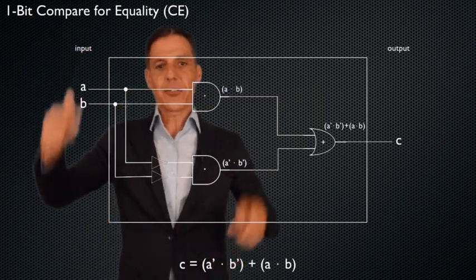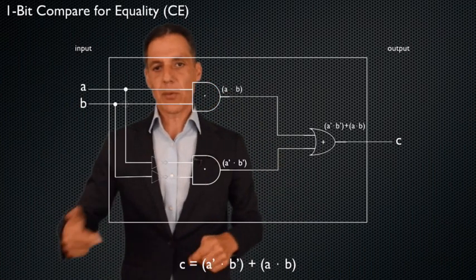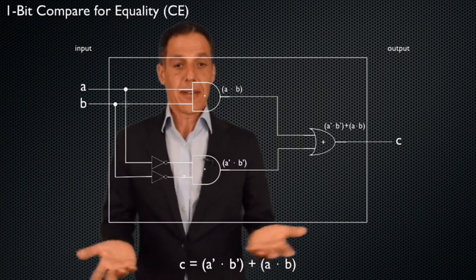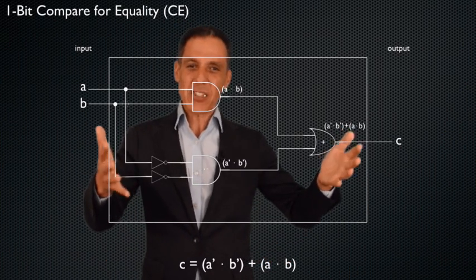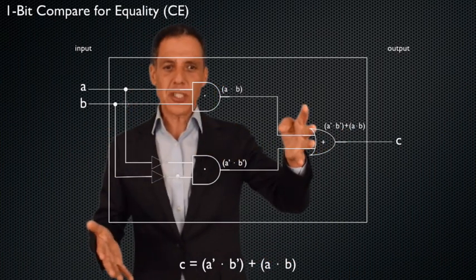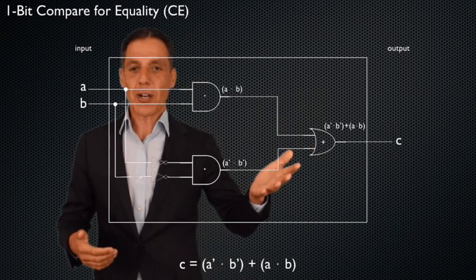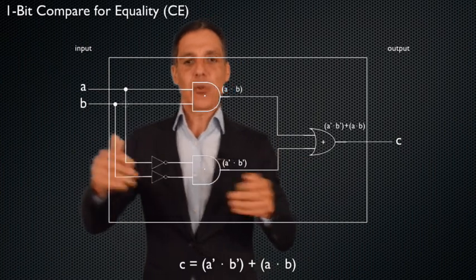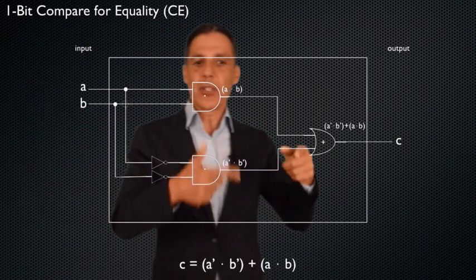So when you see 0, 0, output 1. When you see 1, 1, output 1. And then all the other times, output 0. You gave it the answer. And now what it's doing is simply, I mean, it is computing it because it's pushing it through the circuitry, but you're the one who did all the hard work. You're the one who told it what the answer is, and now it's simply doing that for all possible inputs using these operations.